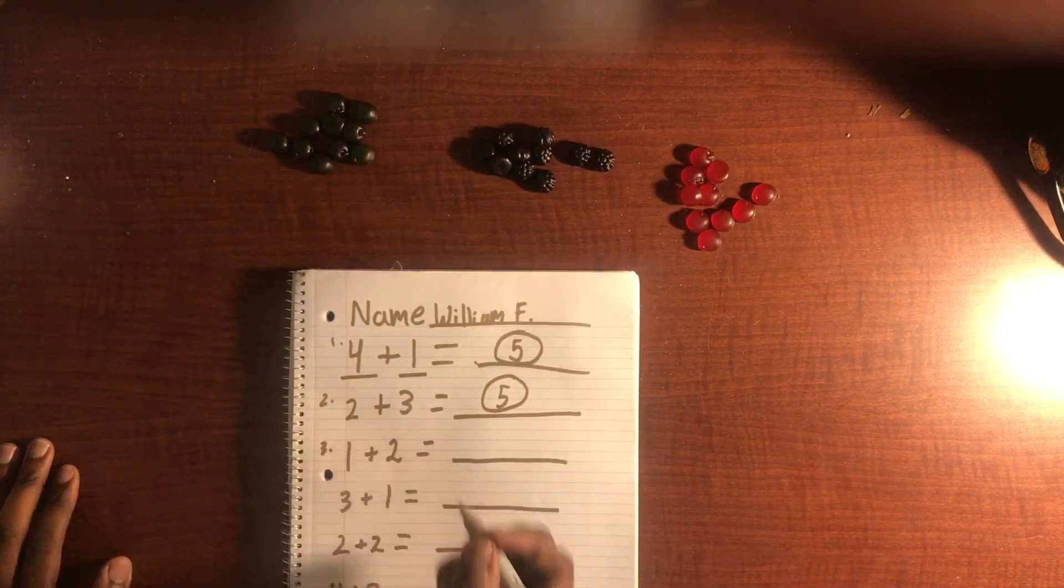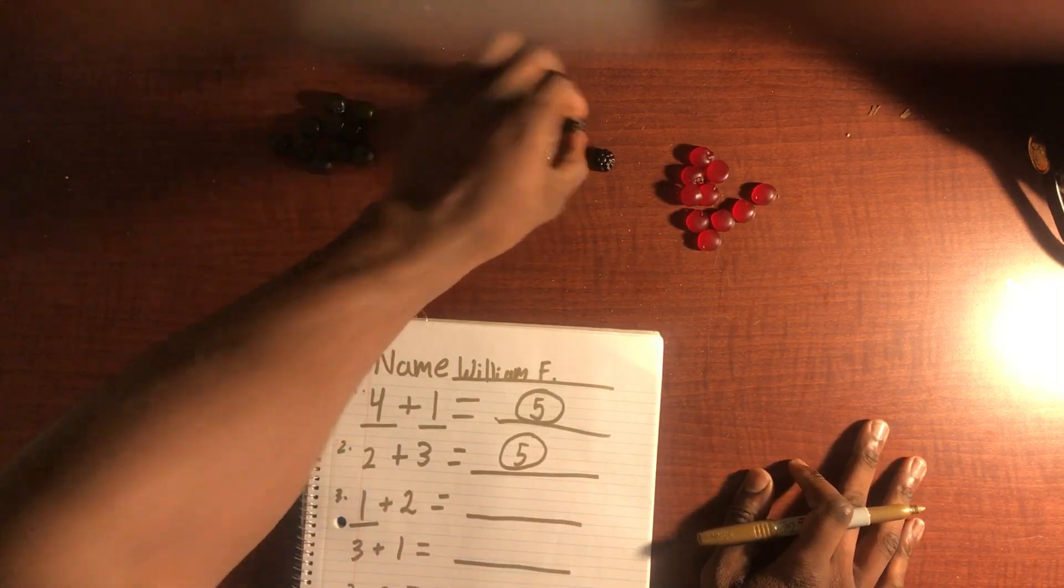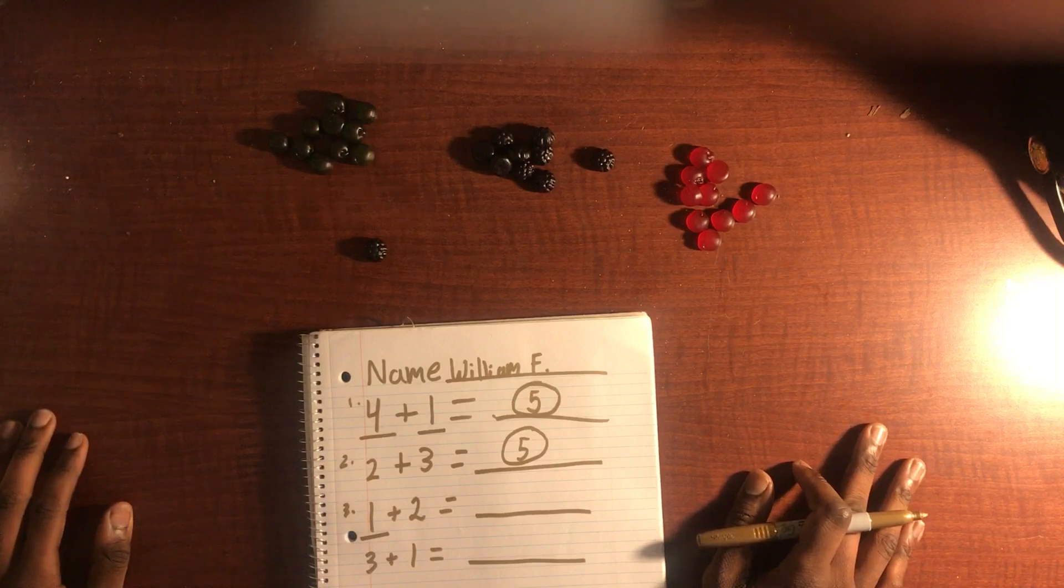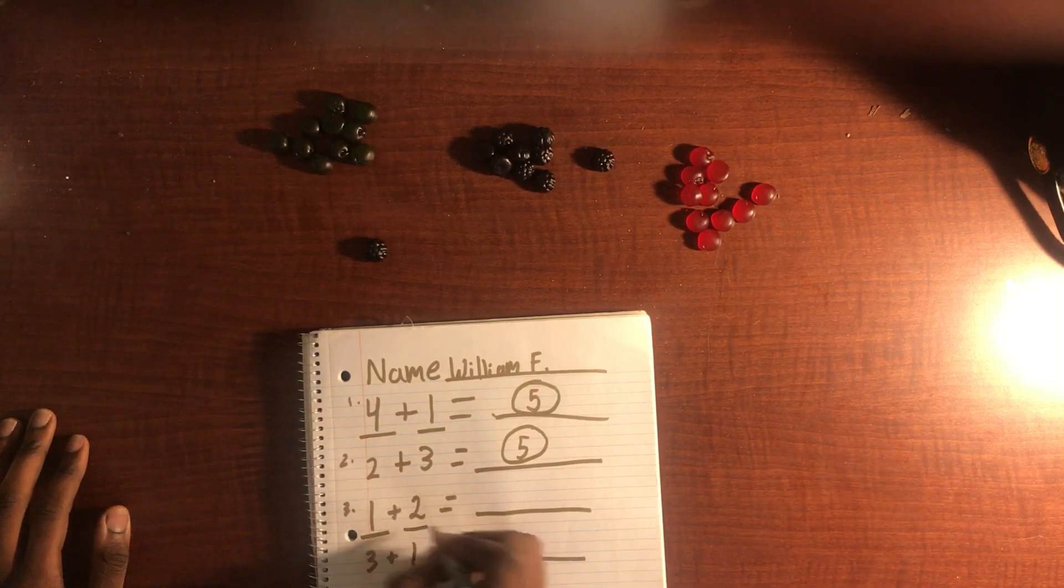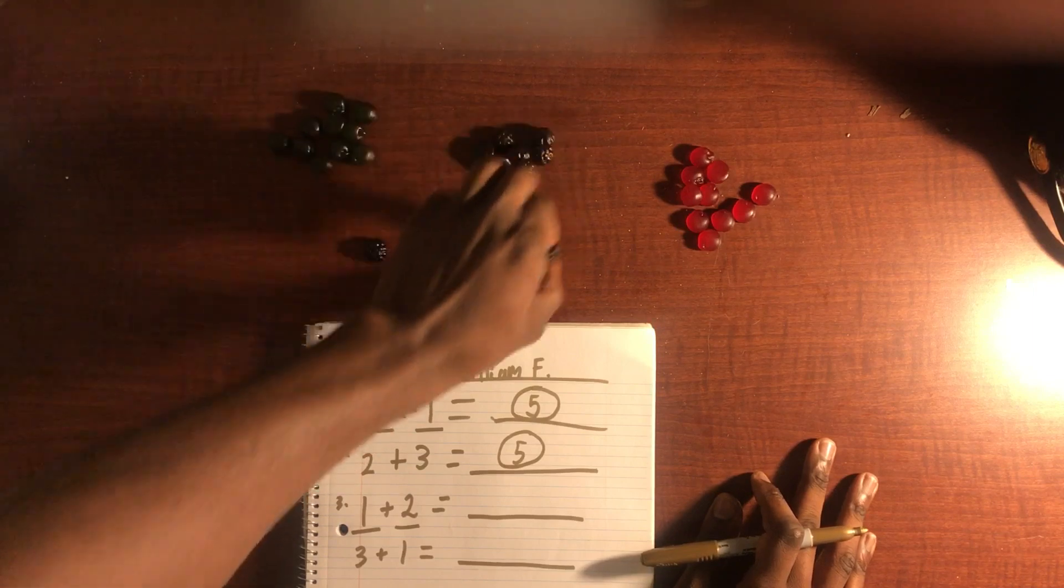Number three. So we have one. Let's go ahead and try and change the colors up this time. Let's have a blackberry, let's have a black gummy. We're going to add two more, because we have two that are being added to the one.